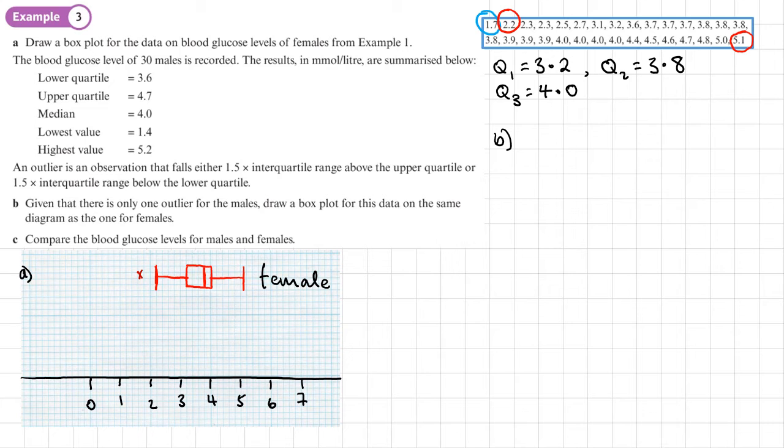We'll start by finding if there are any lower outliers. That's going to be Q1, 3.6 minus 1.5 times the interquartile range. The interquartile range is going to be 4.7 minus 3.6, so that's 1.95. I don't have all the values, only a summary, but if the lowest value is 1.4 and that's less than 1.95, there's my outlier.